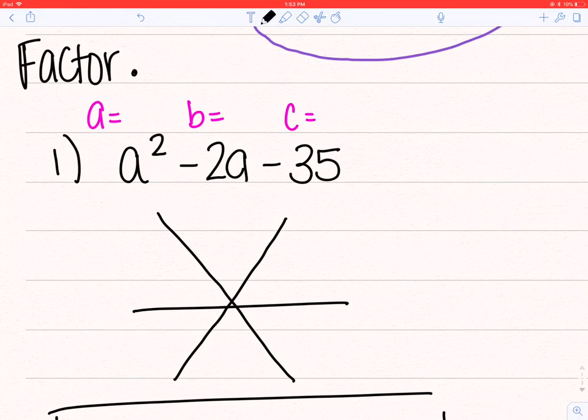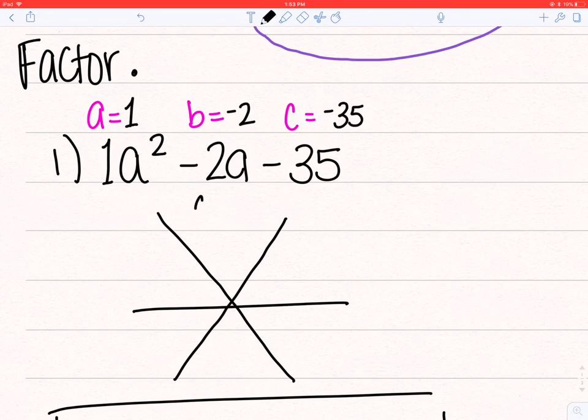So you have a, which is the number in front of, in this case, a squared. So I'll have a equals 1, b equals negative 2, and c equals negative 35. So on top, a times c, negative 35, b on the bottom, negative 2,